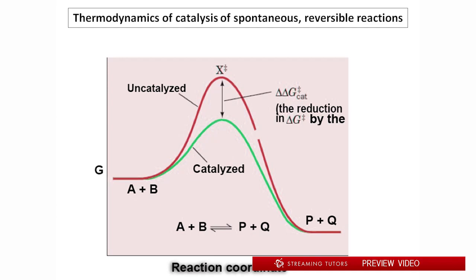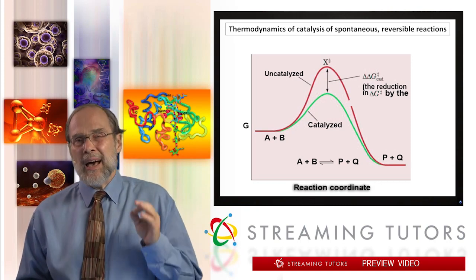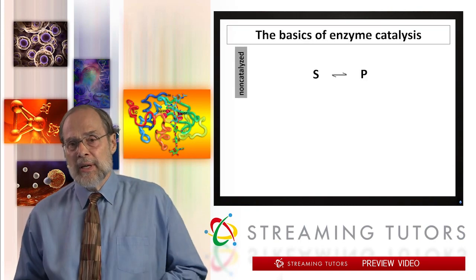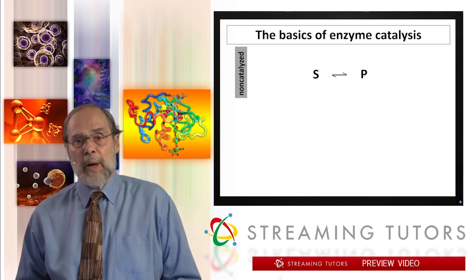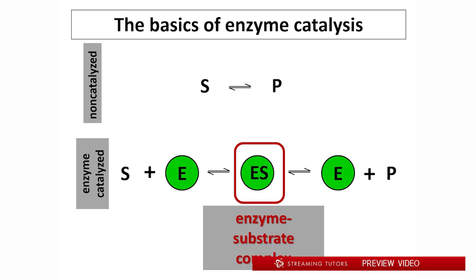You can catalyze reactions dramatically by coming in and reducing that activation energy. This is the non-catalyzed, spontaneous version of the reaction. This is a diagram of the enzyme-catalyzed version in which the enzyme-substrate complex is the key functional entity. It is the entity that will manipulate the substrate in various ways depending upon the enzyme, to reduce the activation energy and dramatically accelerate the rate of the reaction — the enzyme-substrate complex.